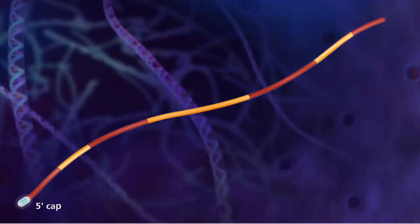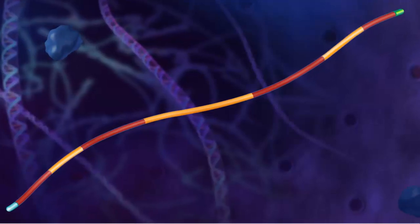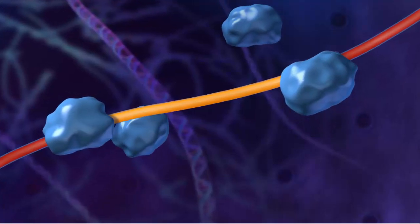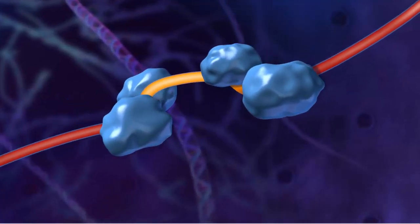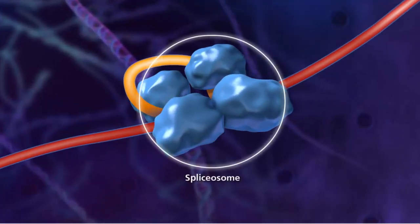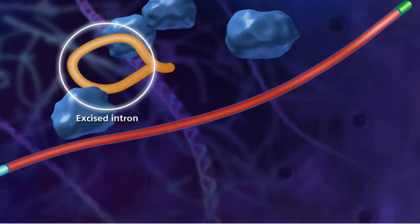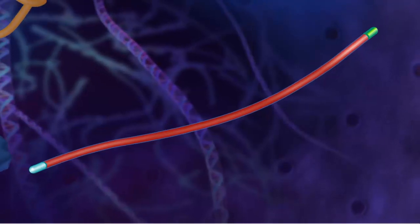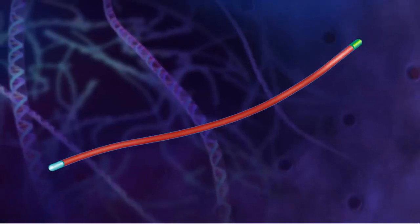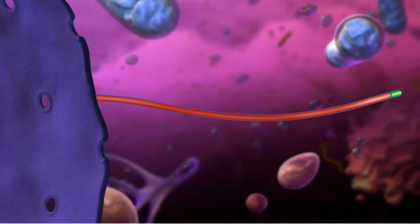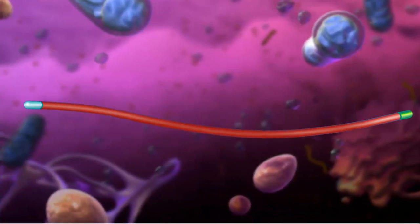Modifications such as a five prime cap and a three prime poly-A tail are added. This process is called intron splicing and is performed by a complex made up of proteins and RNA called a spliceosome. This complex removes the intron segments and joins the adjacent exons to produce a mature messenger RNA strand that can leave the nucleus through a nuclear pore and enter the cytoplasm to begin translation.